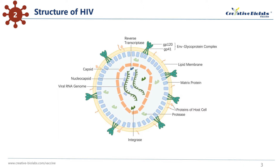Each GP160 spike splits to form two glycoproteins: the docking protein GP120 on the outside of the virion's membrane, and the transmembrane protein GP41 that actually pierces the viral membrane. GP160 is the part of an HIV virion that attaches it to a target cell, most often a CD4-positive T cell. Each of GP120 and GP41 is a trimer. When a virion attaches to a target CD4-positive T cell, the trimers open to create a mechanism that, along with the cell CD4 receptor and either of the two co-receptors CCR5 or CXCR4, accomplishes entry into the cell.